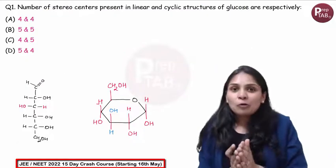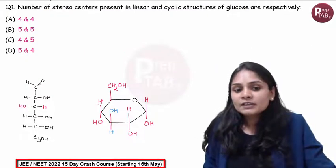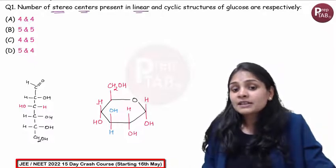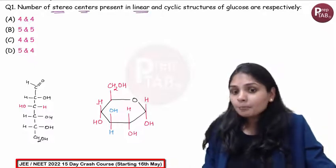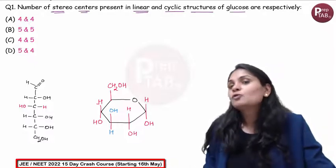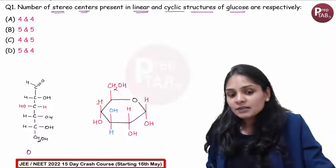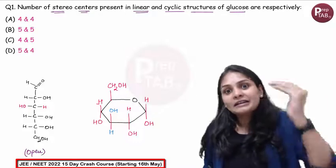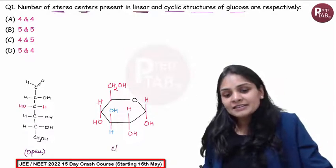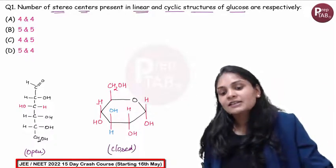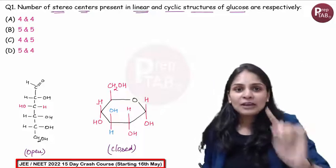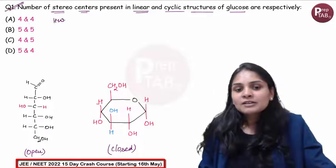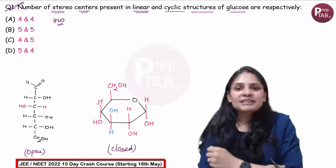Fine, guys. Here is a homework question: you have to identify the number of chiral centers and stereocenters present in the linear (open chain) structure of glucose, and also in the cyclic structure of glucose. The linear structure is the open chain form shown here. Count the chiral centers. And this is your closed cyclic structure — count the chiral centers in this as well. Share your answer in the comment section.